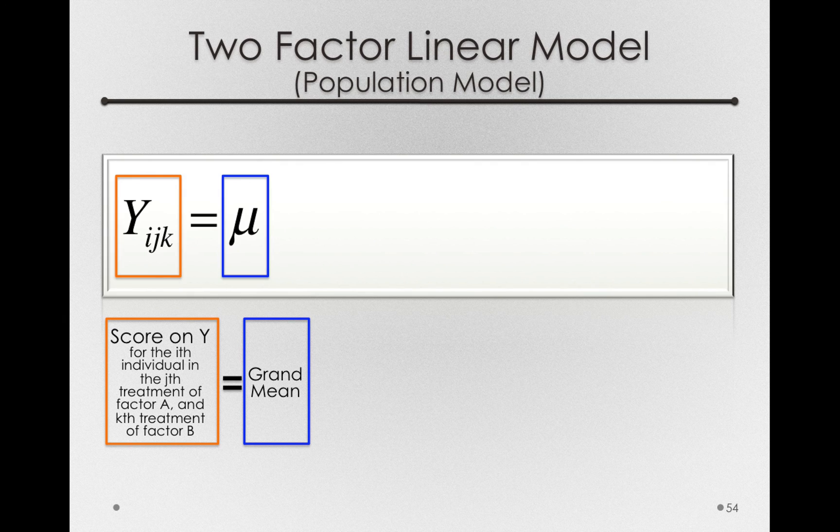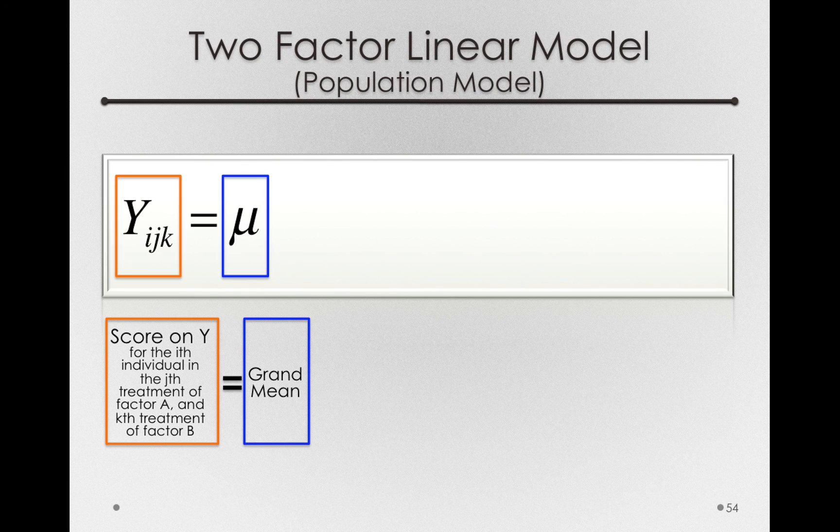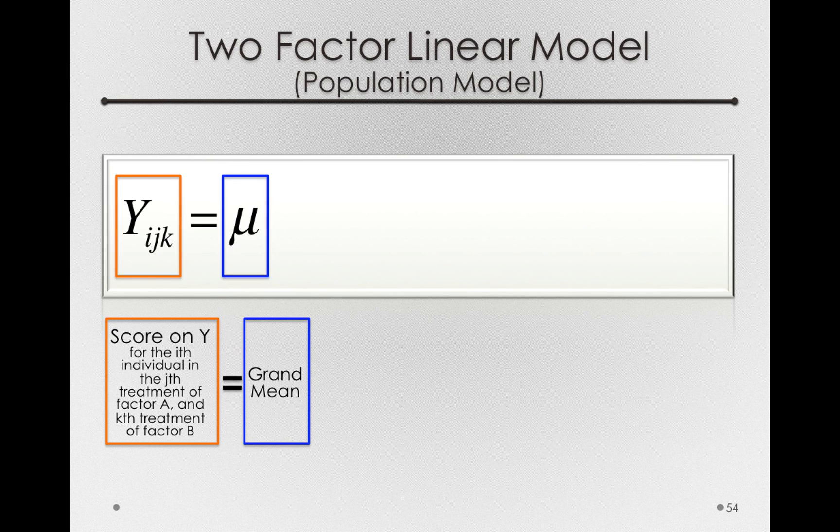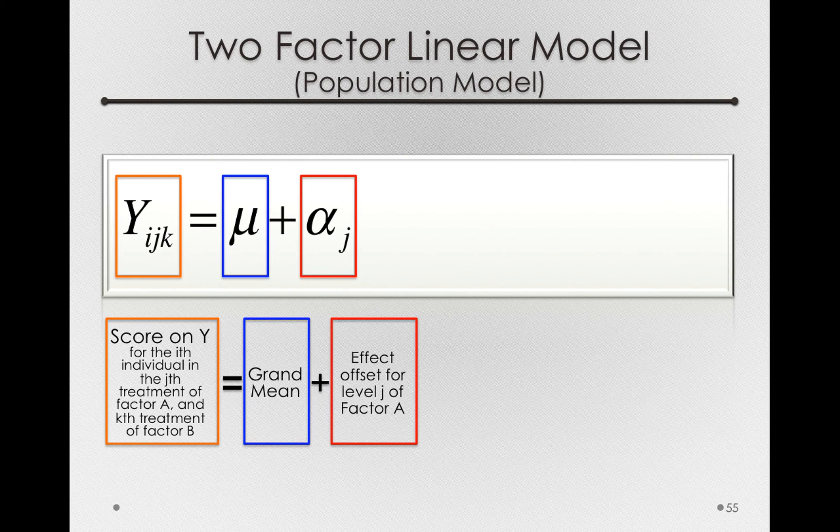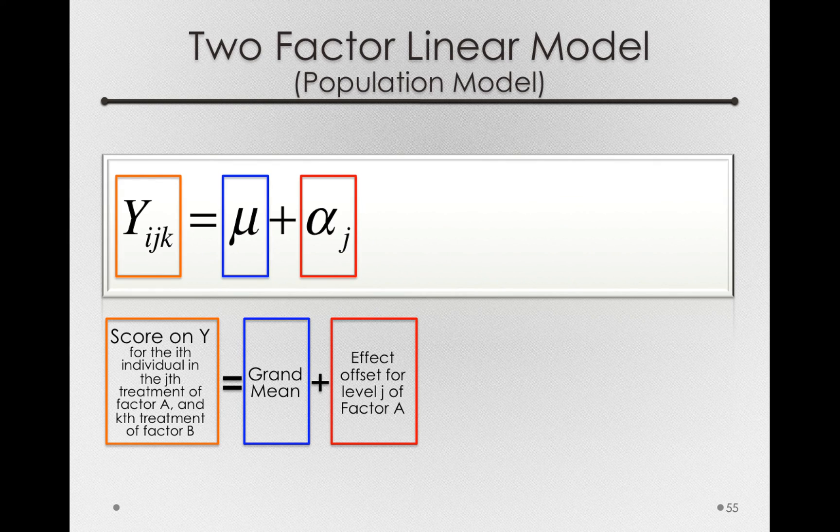We'll be adding to the grand mean treatment offsets that depend on factor A, factor B, and that interaction. So let's start with factor A. The effect offsets for factor A get their own term, which are known as the alpha_j's. So these are the effect offsets for level j of factor A.